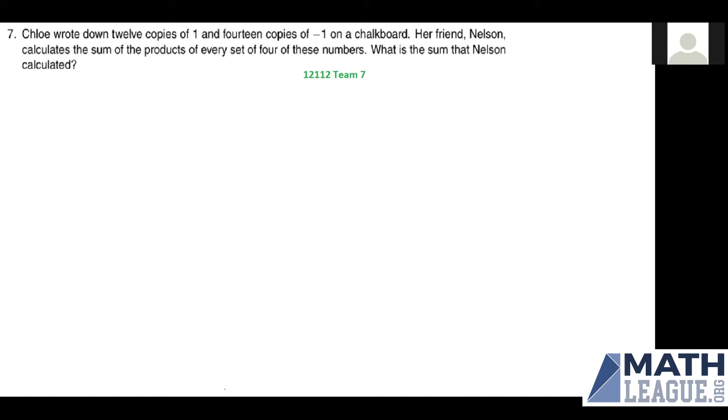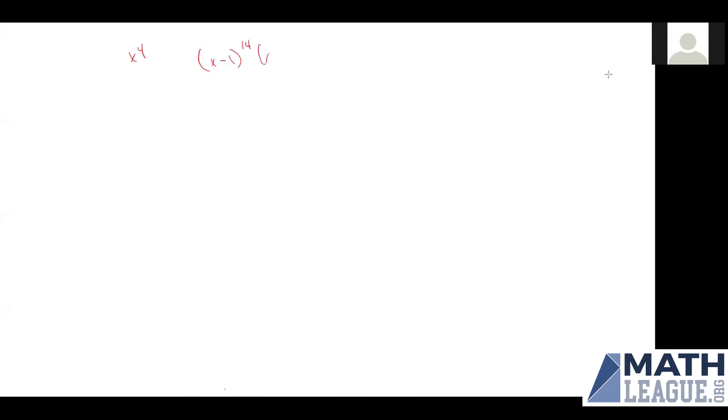Before we do this problem, we're going to sideline it and talk about a different problem that will help solve it. The one I'm talking about seems like it has nothing to do with this problem: find the coefficient of x to the fourth in the polynomial (x minus 1) to the 14th times (x plus 1) to the 12th. We can use things we know about products and switch around the way we multiply them, so this is just the same as (x minus 1) squared times (x plus 1) to the power of 12.